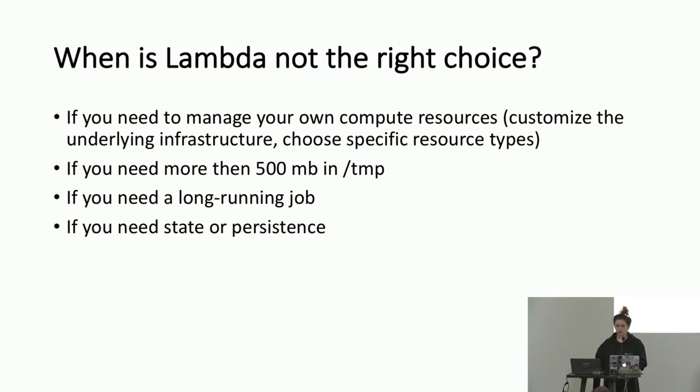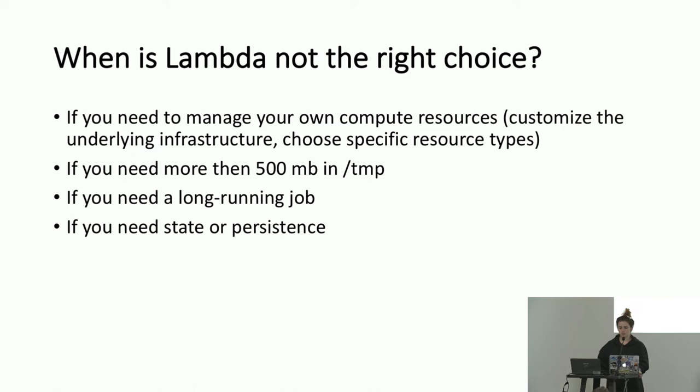If you need more than 500 megabytes in temp storage — your function gets a certain amount of space while it's executing, and that is it — or if you need to handle actual state, maybe pick a different tool. If you need a long-running job, the timeout on Lambda function execution time is about 300 seconds now. If you need longer than that, or if you need state or persistence, this is not the right choice.